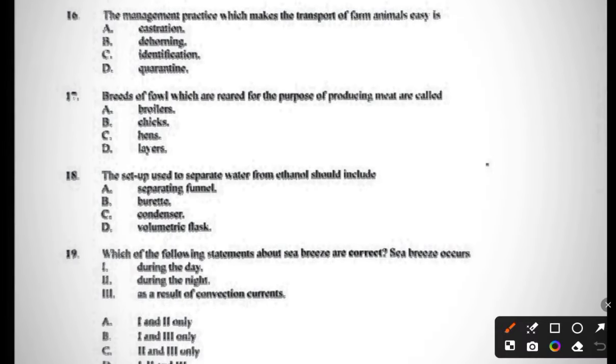Question sixteen: the management practice which makes the transport of farm animals easy is castration, dehorning, identification, or quarantine. The answer is B, dehorning. When animals are dehorned, it's easy to handle them. Question seventeen: breeds of fowl which are reared for the purpose of producing meat are called broilers, chicks, hens, or layers. The answer is 17A, broilers.